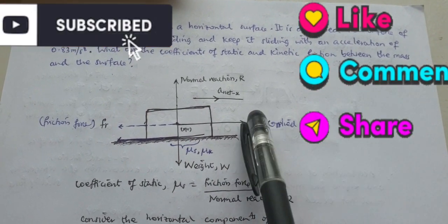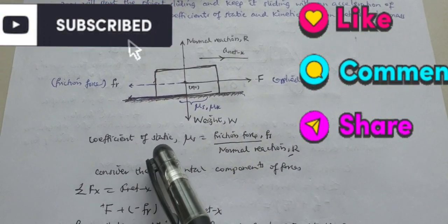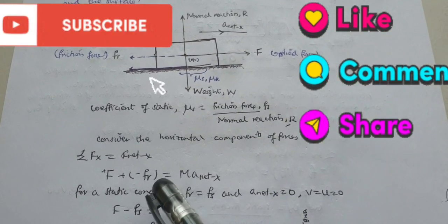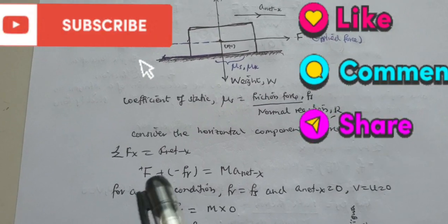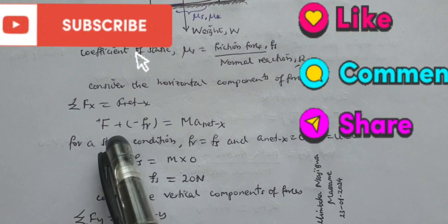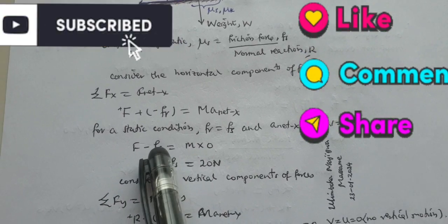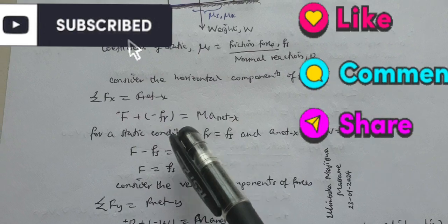Now, coefficient of static friction is friction force divided by normal reaction. Consider the horizontal components of force. We substitute the value for friction as μ_s times normal reaction. Note that for static friction, there is no acceleration.